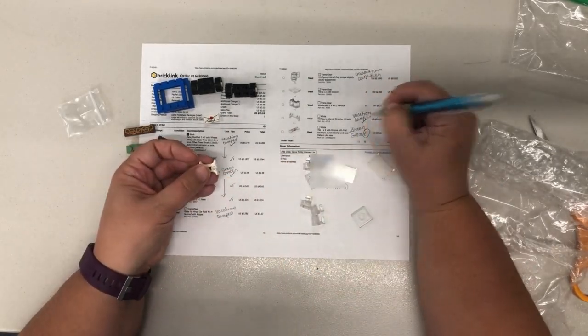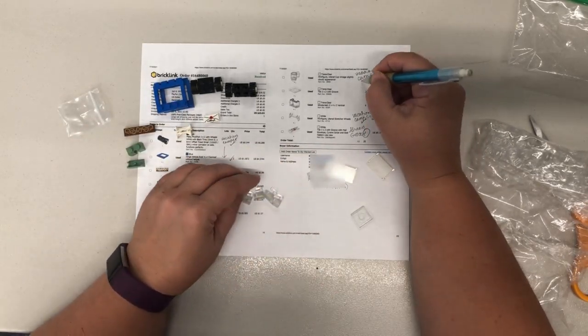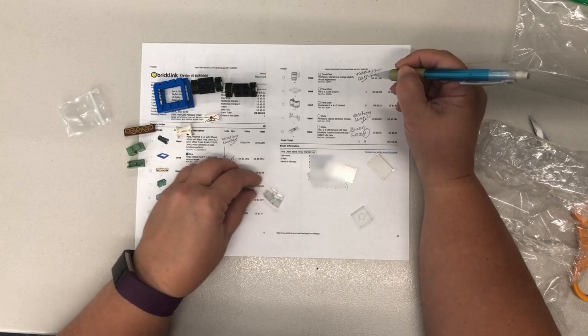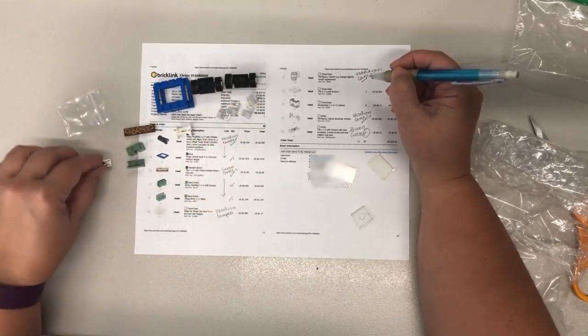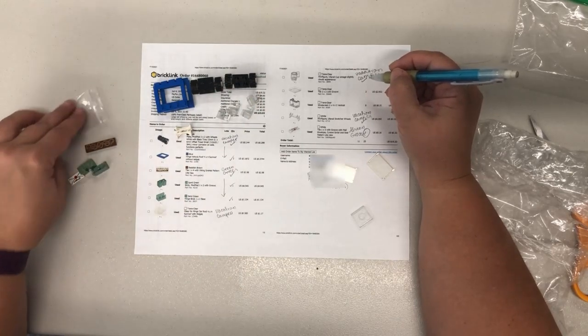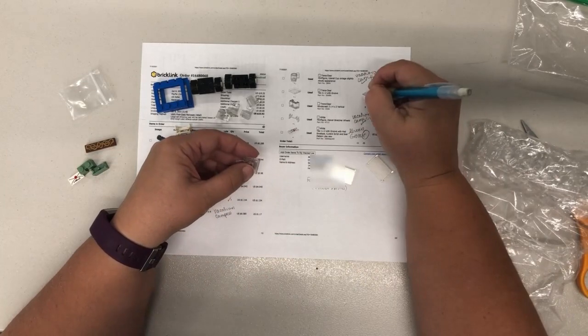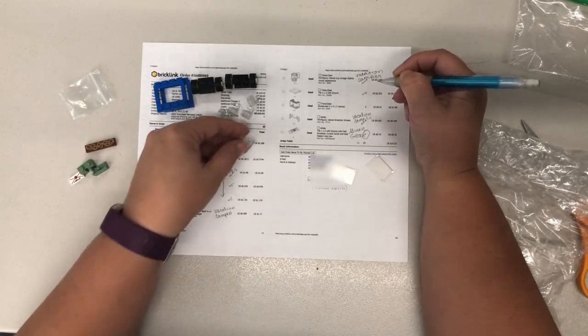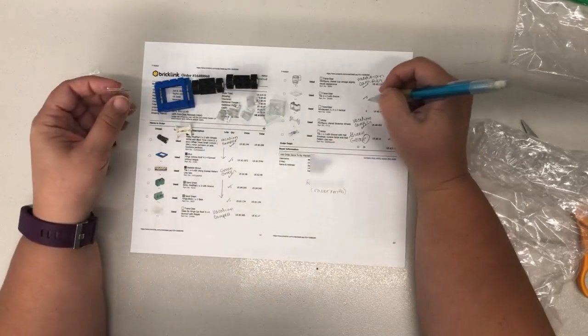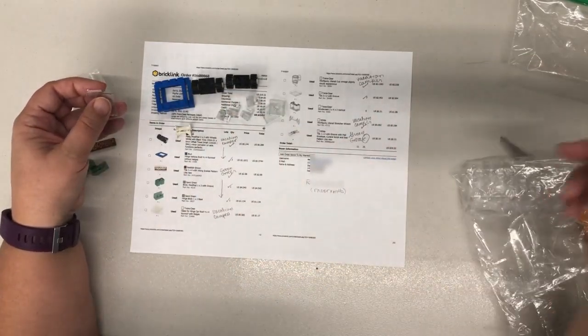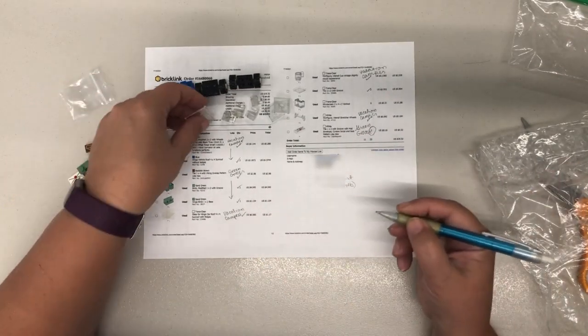Two of the camper wheels. Four of the trans clear mugs. Two of the clear tiles. Two of the clear tiles. And two of the sunroof.